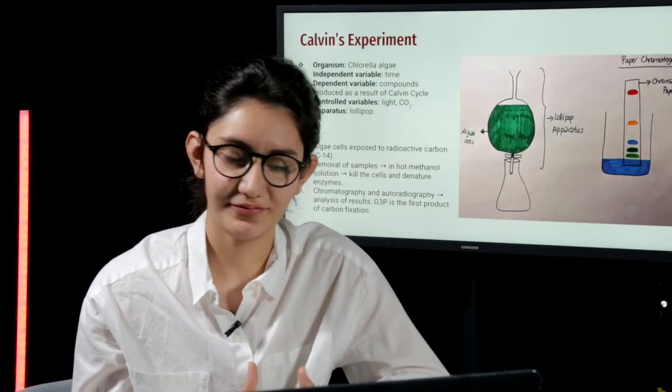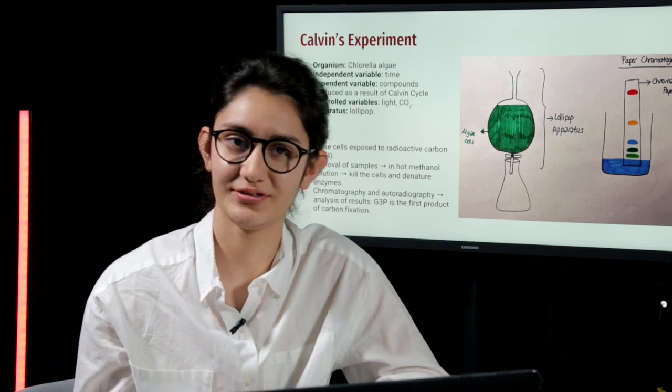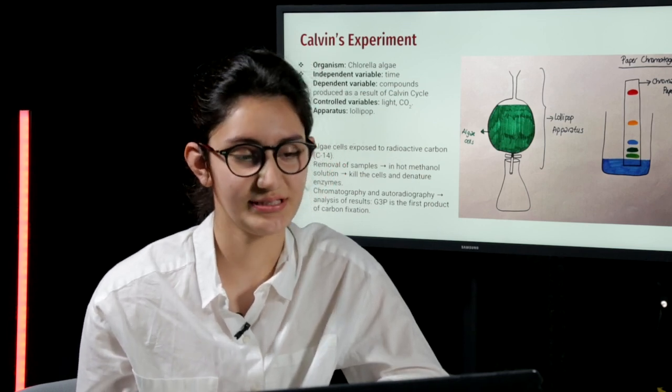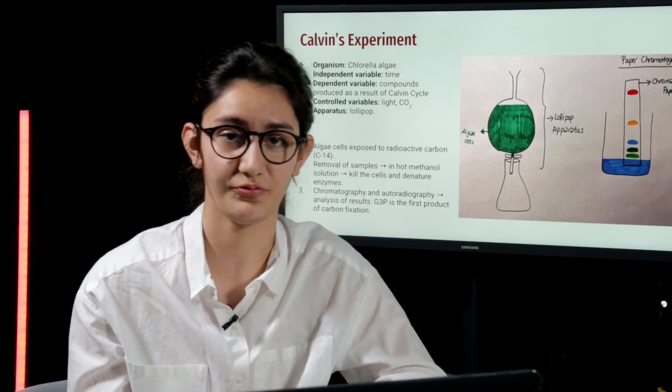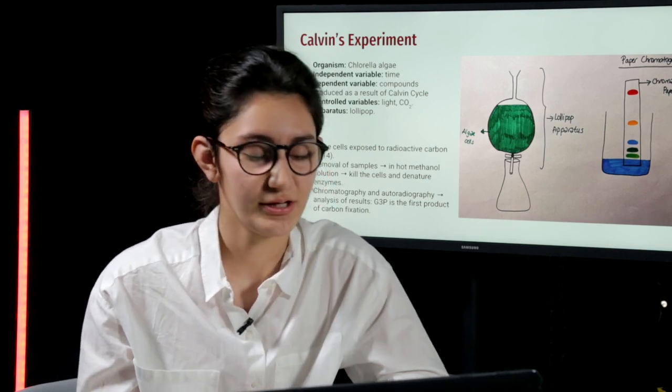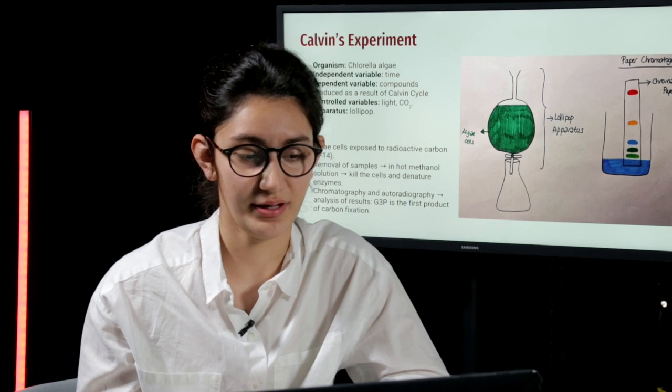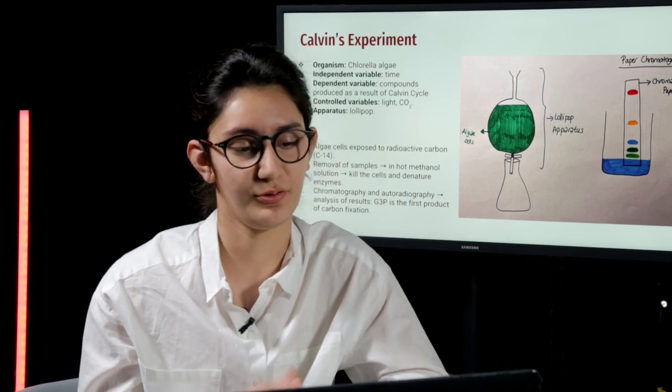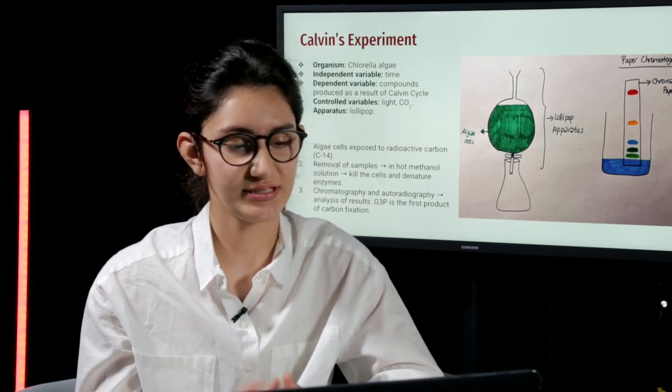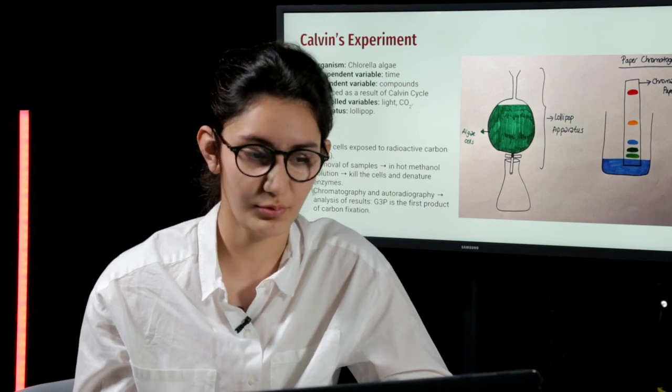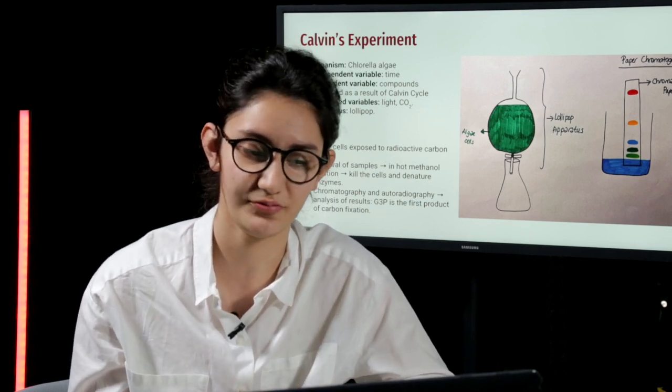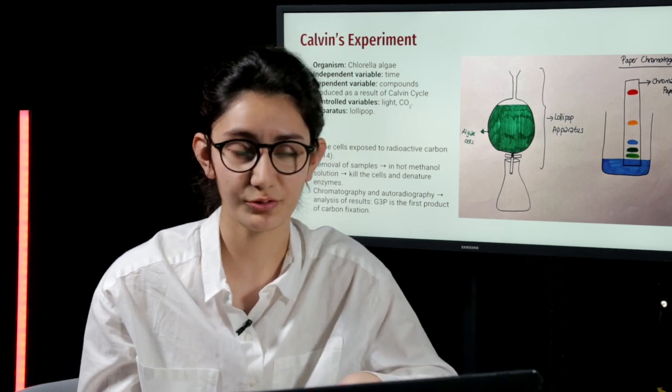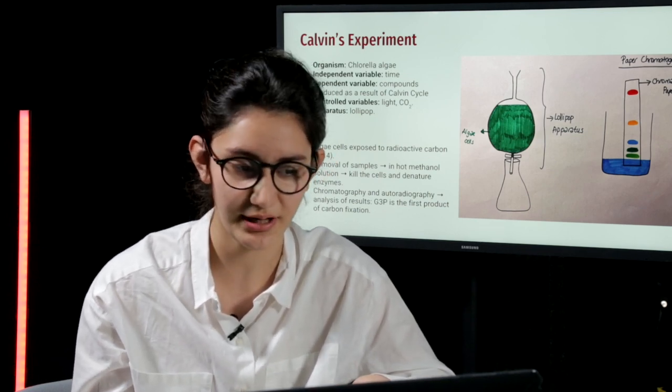There is a scientist named Calvin who made an experiment to measure the products of the Calvin cycle. He used a unicellular eukaryote called chlorella algae. His independent variable was time, whereas his dependent variable were the compounds produced as a result of Calvin cycle. The controlled variables were light and carbon dioxide.